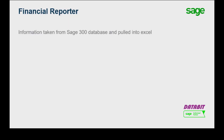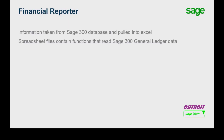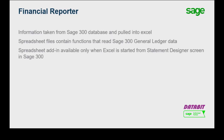All Sage 300 financial statements are generated in Microsoft Excel as spreadsheet files. These spreadsheet files contain functions required to read Sage 300's general ledger data. Please note the statement add-in is available only when you start Excel from the statement designer in Sage 300.